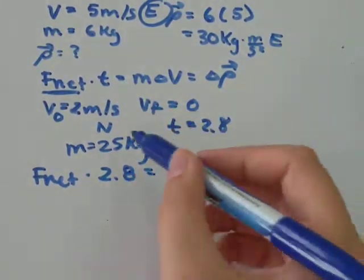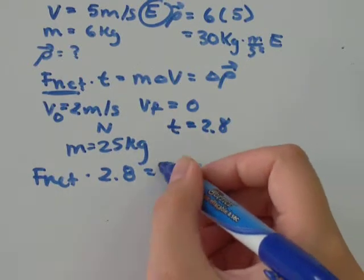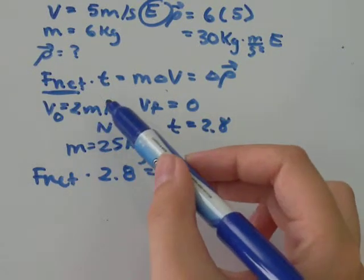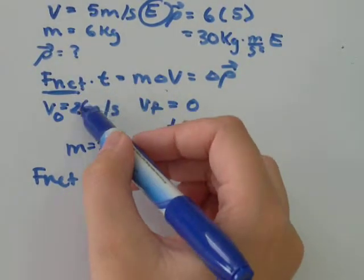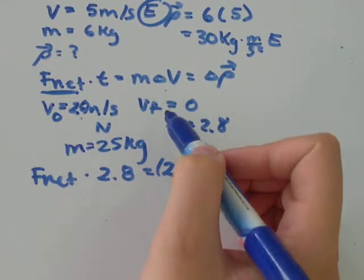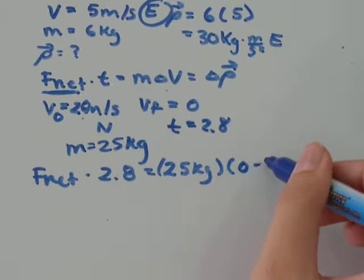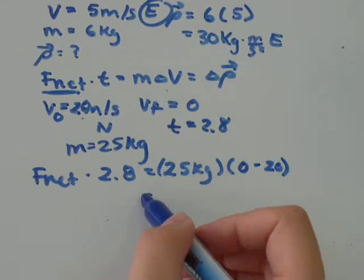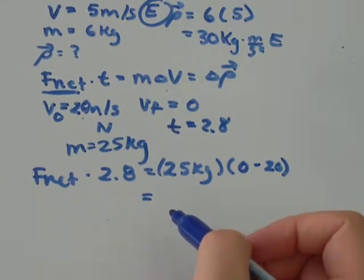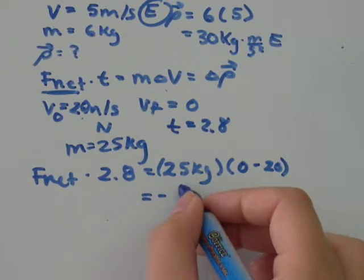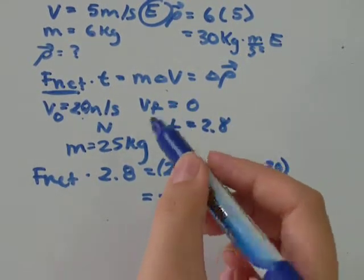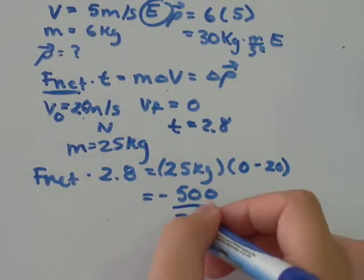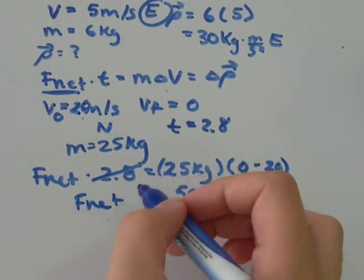F_net times time equals the mass, 25 kg, times the change in velocity. We went from a velocity of 20 meters per second to 0, so I'm going to go 0 minus 20, the final velocity minus the initial velocity. So that will simplify down to 25 times negative 20, which is negative 500, and 2.8 times F_net. So I'll just divide by 2.8 to get F_net by itself.